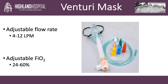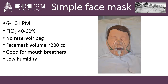The Venturi mask has an adjustable flow rate of between 4 and 12 liters per minute. The FiO2 is also adjustable, from 24 to 60%. This mask covers both the nose and the mouth and can deliver higher levels of oxygen compared to simple nasal cannula. The Venturi pieces are different colors and work off the Venturi principle — each colored piece has a different orifice size, which varies the flow, allowing precise adjustments in flow rate and FiO2. For example, the orange Venturi piece has an FiO2 of 50%.